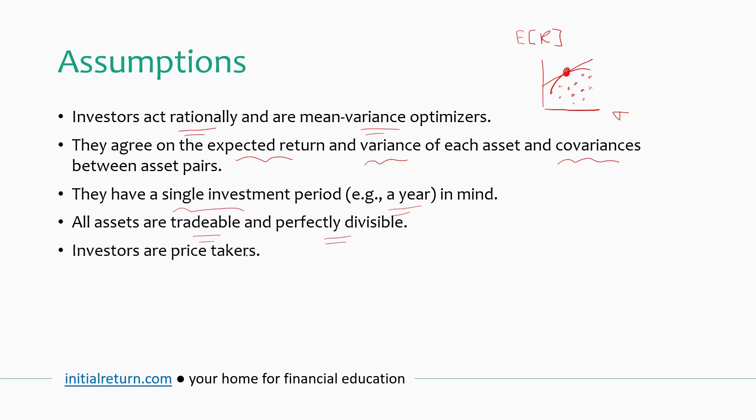The next assumption is again an important one. It says that investors are price takers. What this means is that no single investor has the power to influence prices through their trades. This requires the market to be sufficiently competitive so that there are enough investors in the market, such that big trades would not create a price impact.